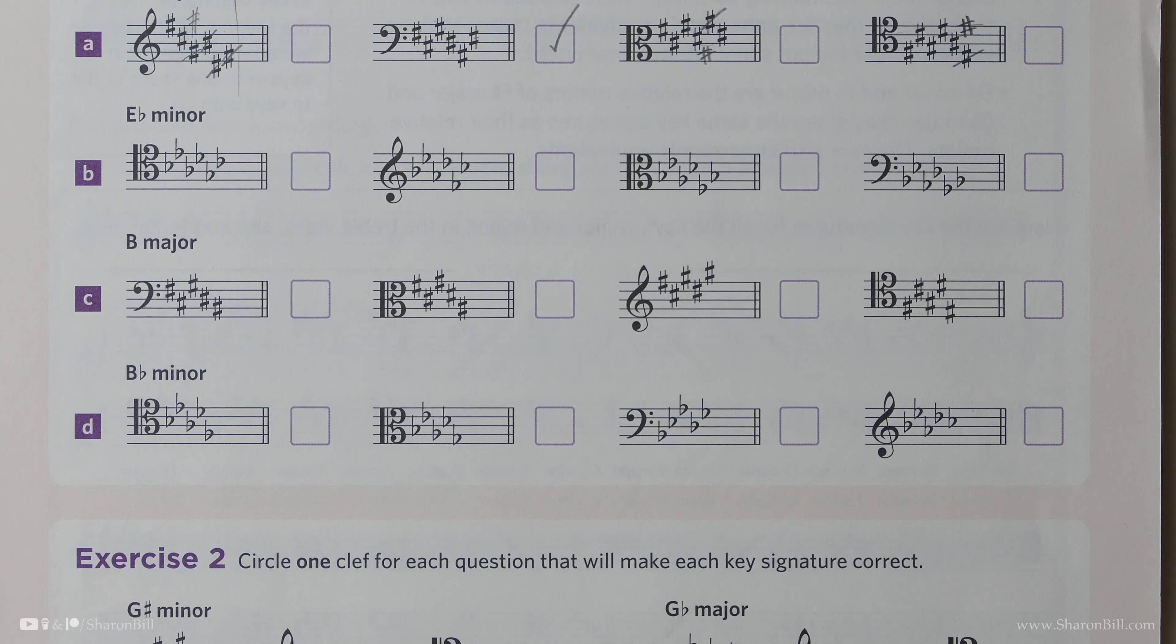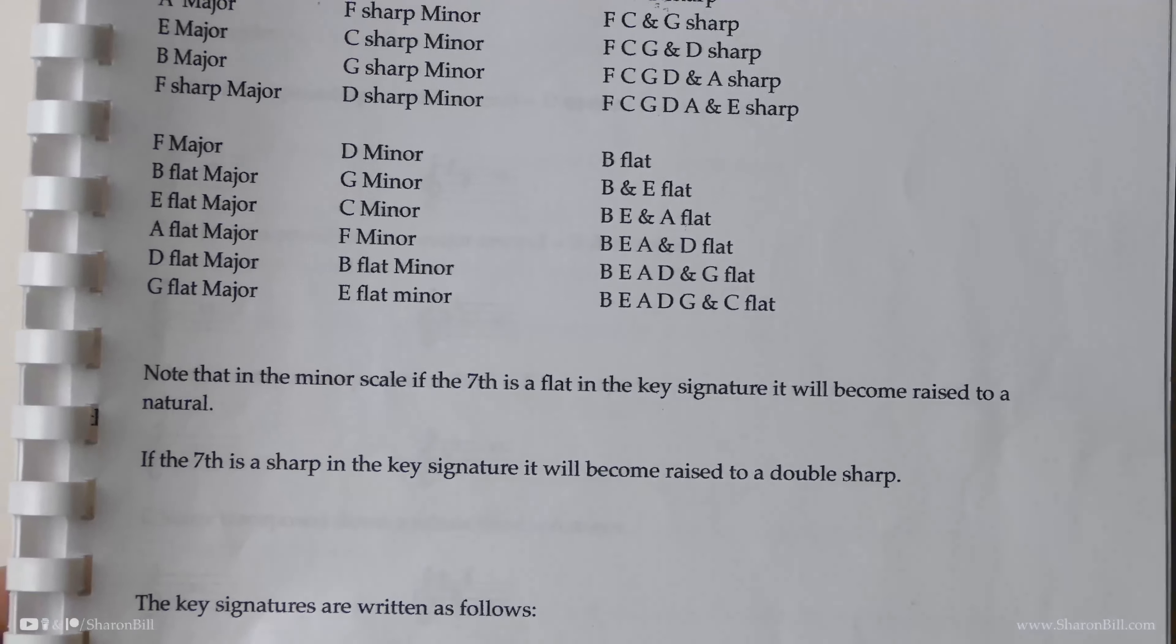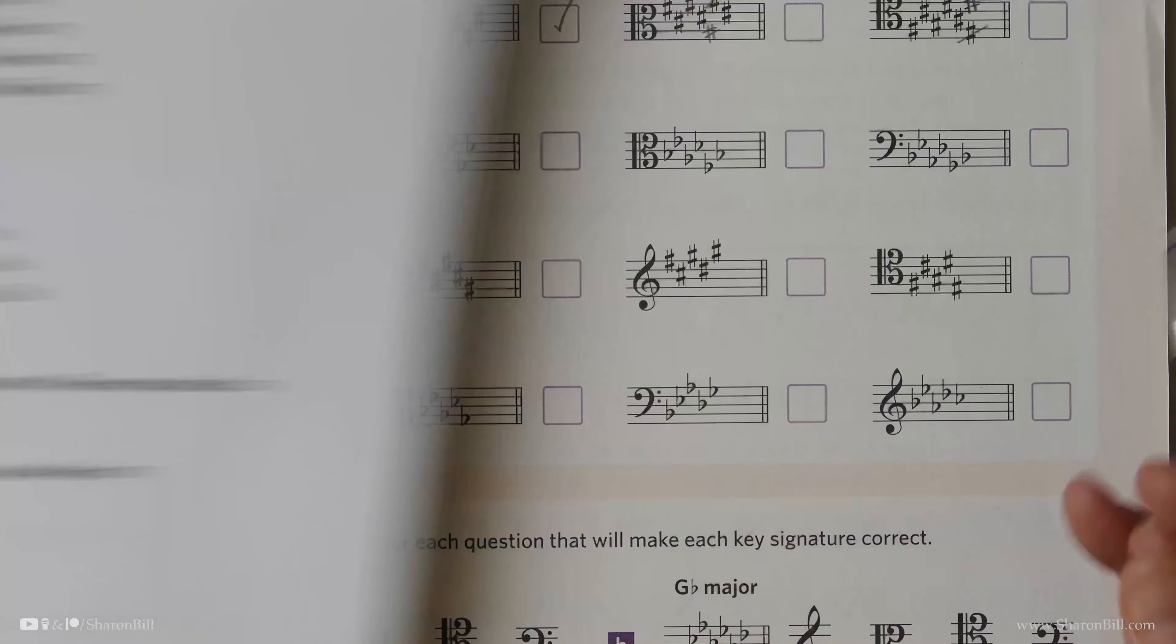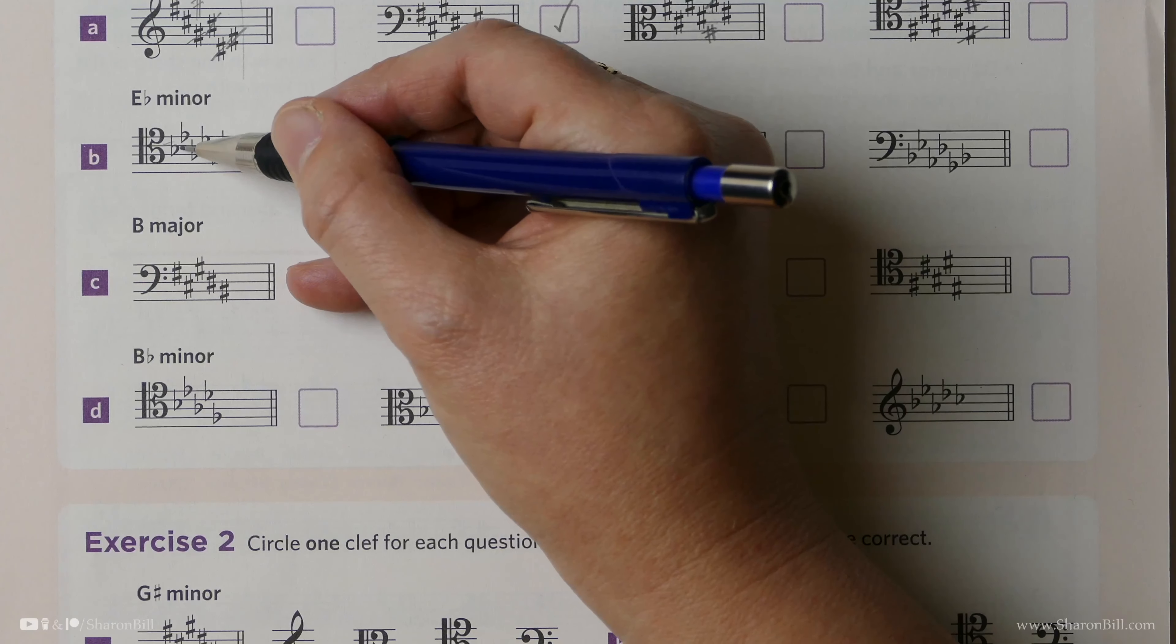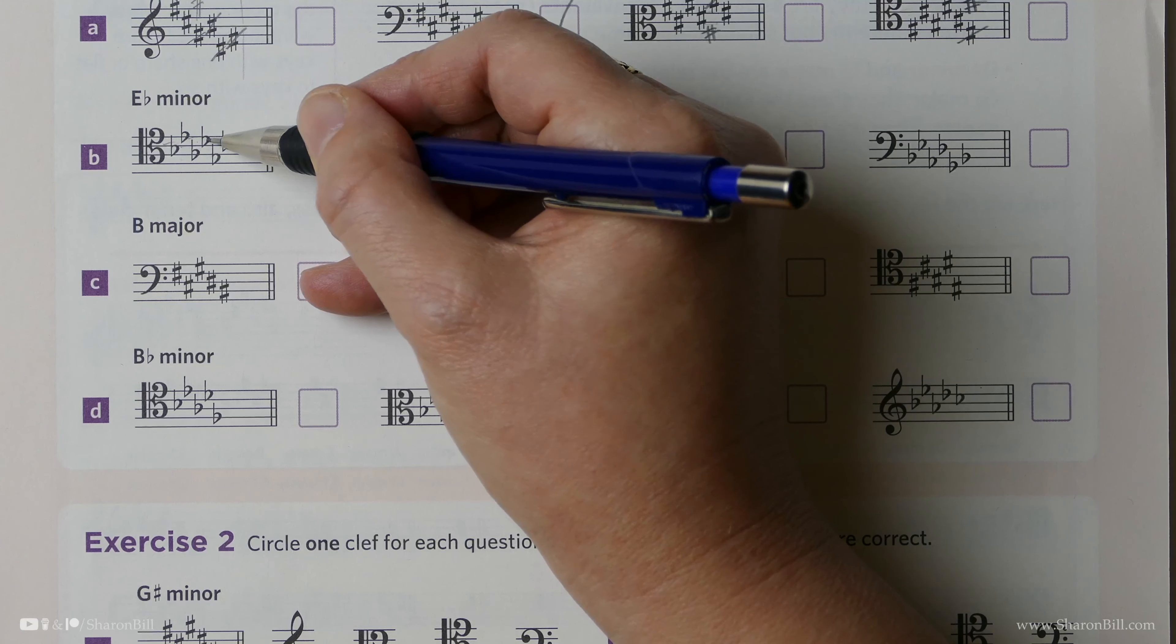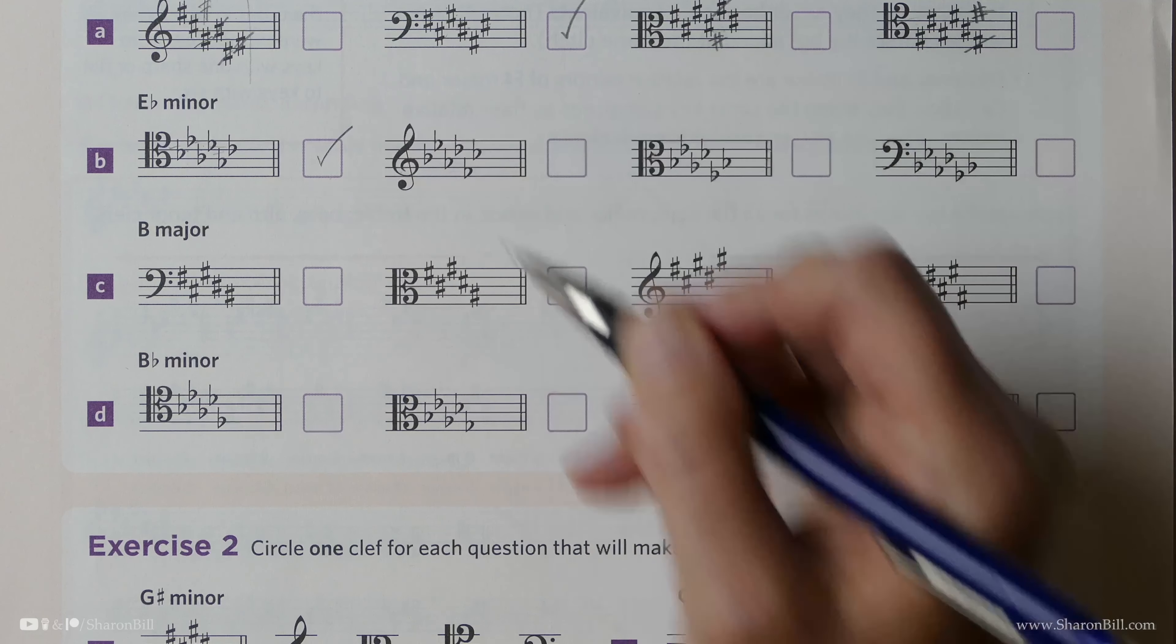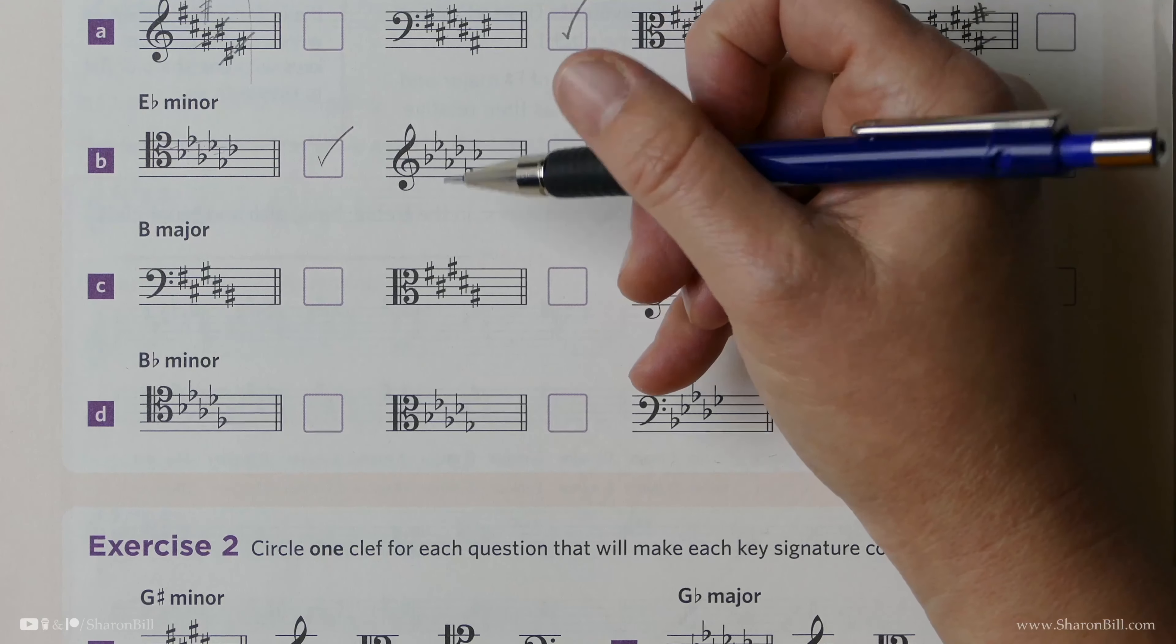So, E-flat minor is related to G-flat major, which has six flats. B-E-A-D-G-C. So, C-B-C-D-E-C-B-A-D-C-B-A-G-C. That is correct. That's that. So, we could just leave it at that, but let's think, why are these incorrect? Let's just use this as a good revision opportunity.